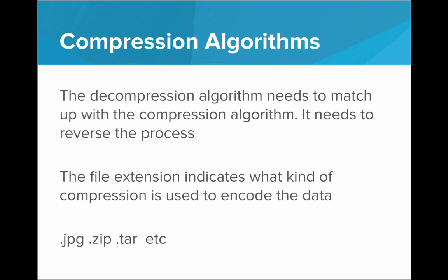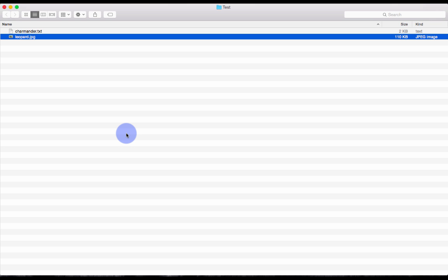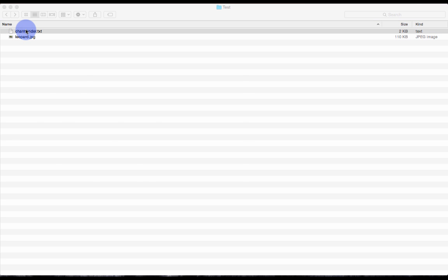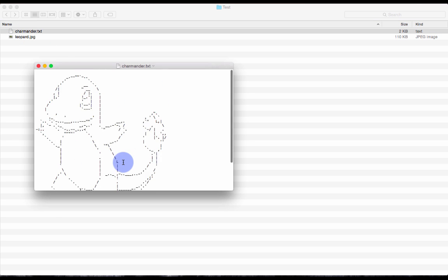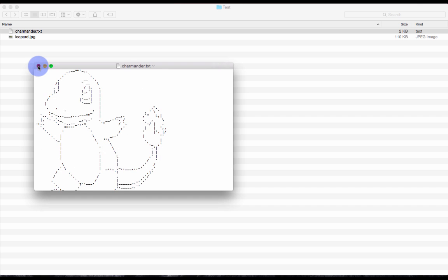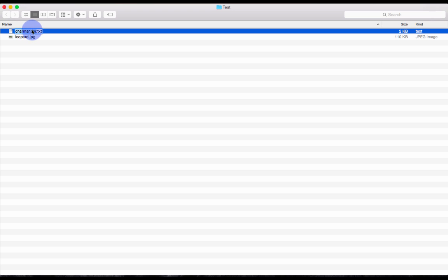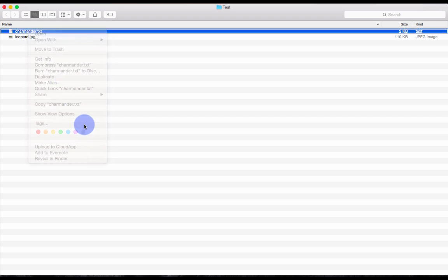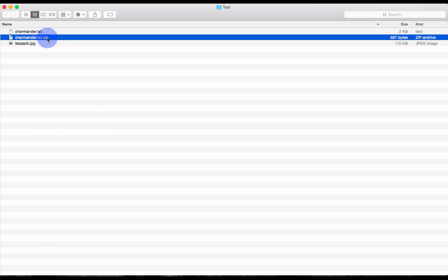So let's see an example of what these file extensions look like on a real computer. So here I have a folder with two simple files. If I open up this Charmander.txt file, I see that it's just a simple picture of Charmander, the Pokemon. Now what I want to do is compress down this text file to take up less space. You see that right now it's taking up two kilobytes of space. But if I simply right click and say compress Charmander.txt, what I get is a .zip file. So my computer used the .zip algorithm to produce a compressed file. We see that this is a lot smaller. It's 597 bytes.